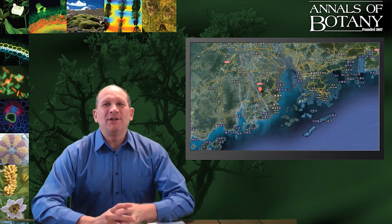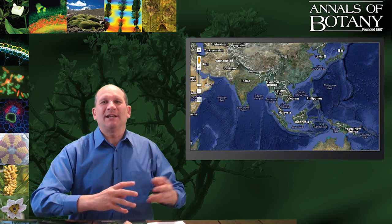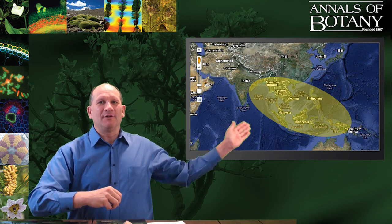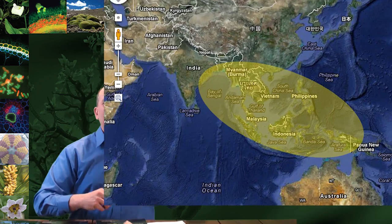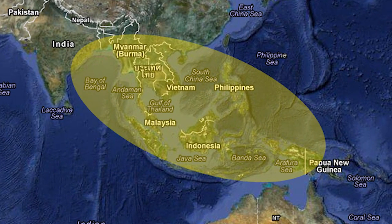Banana originates from the Indo-Malaysian centre of diversity, mostly 500 to 2,000 kilometres to the south and west of Guangzhou, running from Papua New Guinea through the Malaysian peninsula and parts of China, Thailand and Burma into India.